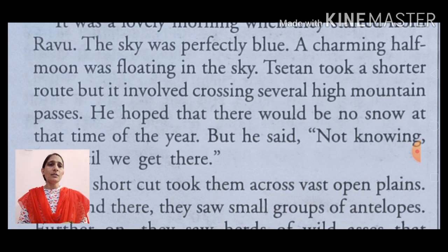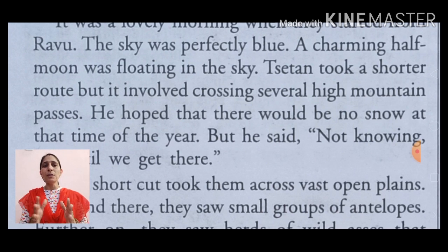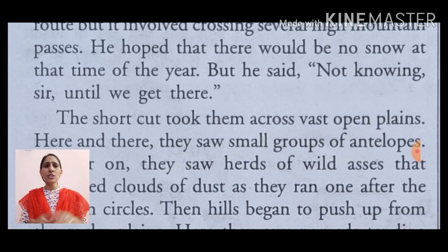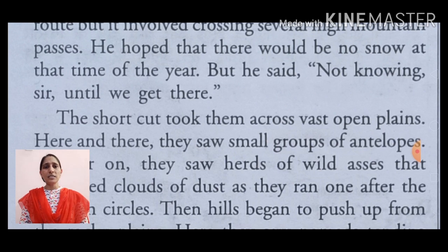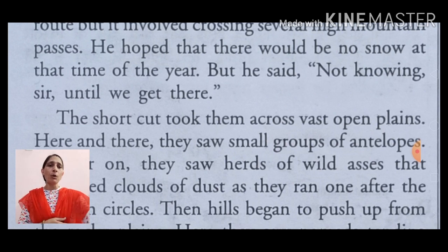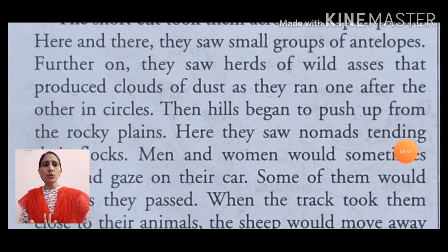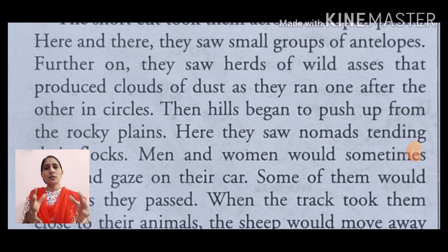He hoped that there would be no snow at that time of the year — उसे उम्मीद थी कि रास्ते में इन दर्रों में उन्हें कोई बर्फ नहीं मिलेगी साल के इस समय। But Satan said, 'Not knowing, sir, until we get there' — शैतान ने कहा कि नहीं जान सकते, श्रीमान जी, जब तक हम वहाँ पर नहीं पहुँच जाते। The shortcut took them across vast open plains — जो shortcut था वो उन्हें लेकर के गया खुले plains में। Here and there, there were small groups of antelopes — इधर-उधर उन्होंने छोटे-छोटे समूह देखे जो कि हिरणों के थे।